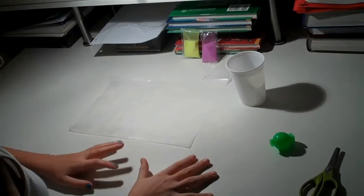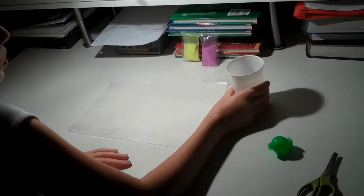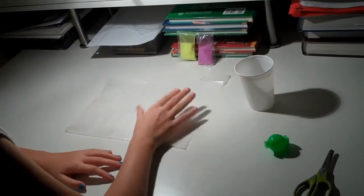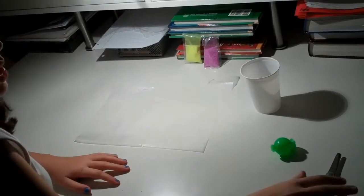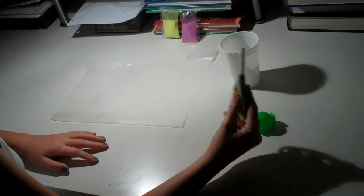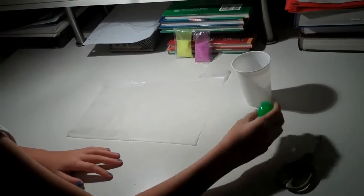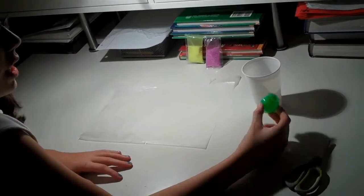So the first step is all your ingredients. You're going to need a cup of water, a sheet to work on, scissors, and you're going to need a mold, which you can buy online.